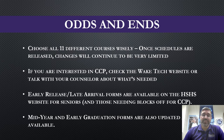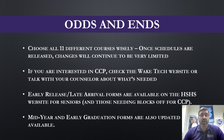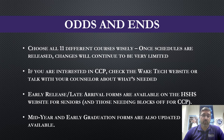Just a few odds and ends as we wrap up. When you go into PowerSchool you'll be asked to choose 11 courses — eight primary selections and three alternates. Choose these 11 courses very wisely, because once schedules are issued changes will be very limited. If you're interested in the CCP program — the Career and College Promise program — please check the Wake Tech website and speak with your counselor. Early release and late arrival forms, as well as mid-year and early graduation forms, are available on that course registration page.